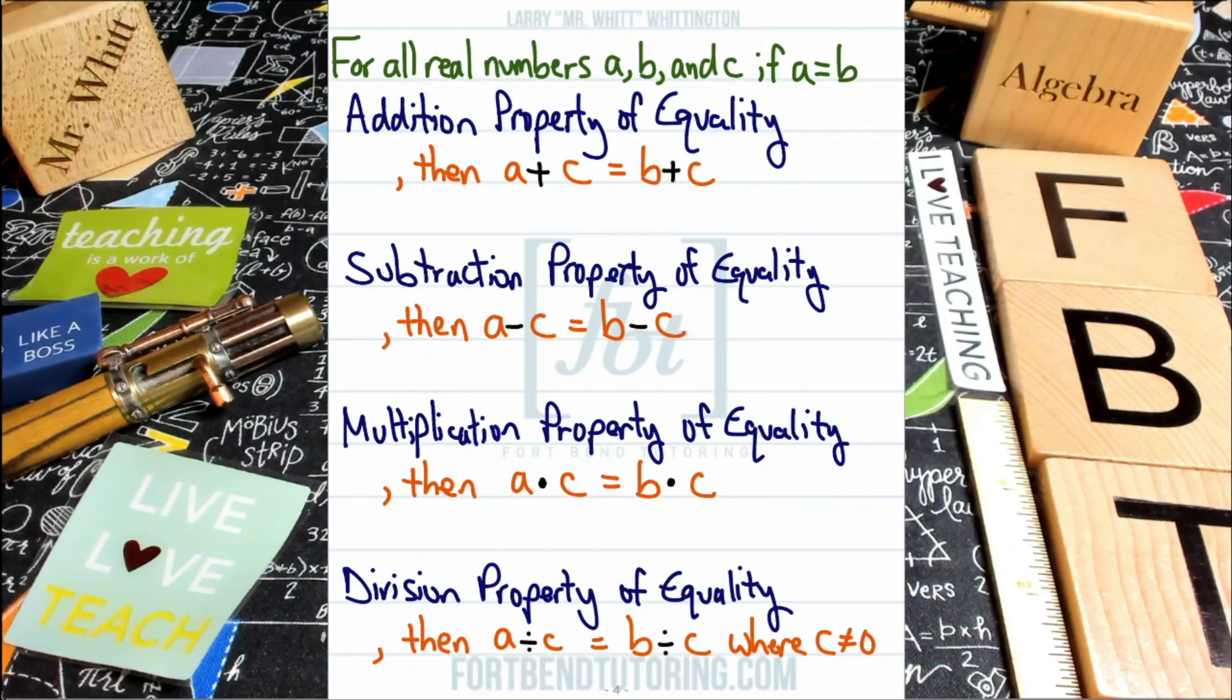For one, for all real numbers A, B, and C, if A equals B, if you add a number C to both sides of the equation, it will retain its equality. That's right, the equation will look different but it will still be balanced. The same thing goes for the other operations found here: the subtraction property of equality, multiplication property of equality, division property of equality. Anytime you do any of these operations to both sides of an equation, the equation will retain its equilibrium and both sides of the equation will be balanced.